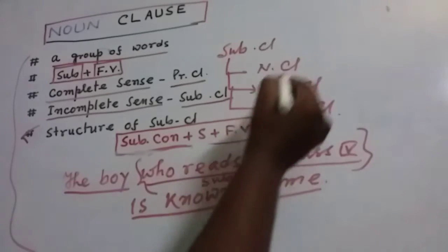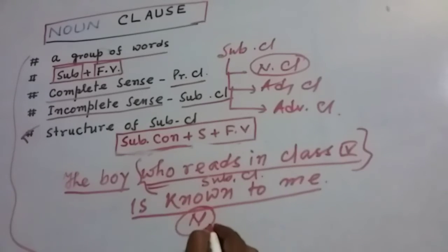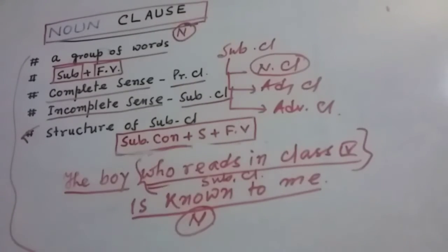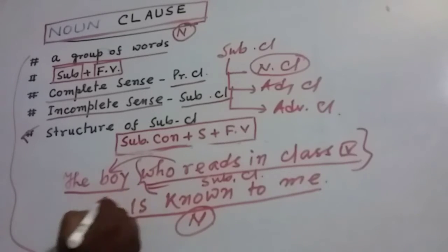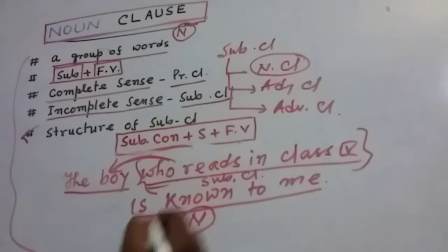Now we will focus on noun clause. Noun clause means these types of subordinating clauses act like a noun. If it acts like a noun, it will be called a noun clause — the noun clause does the work of a noun in a sentence. In the previous example, 'who reads in class 4' is not a noun clause; it is rather an adjective clause, because that subordinating clause is saying something about the boy.